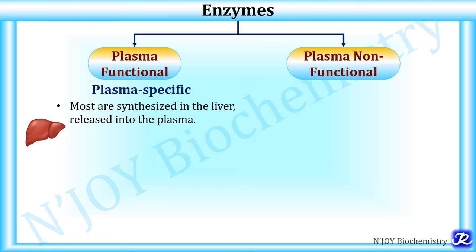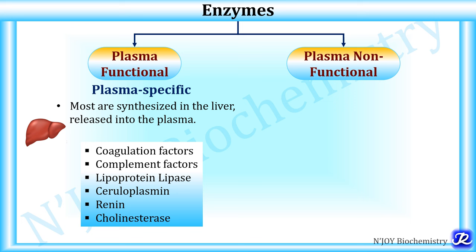Plasma functional enzymes are also called plasma-specific enzymes, and most of them are synthesized in the liver and then released into the plasma. These plasma-specific enzymes are present in higher concentration in plasma than in cells, and they are clinically significant when the serum level is decreased below the reference range. Examples include coagulation factors, complement factors, lipoprotein lipase, ceruloplasmin, rennin, and cholinesterase.